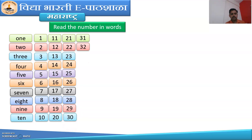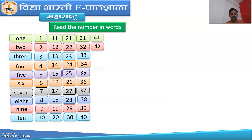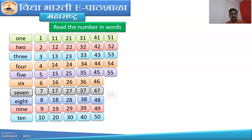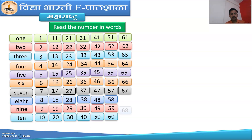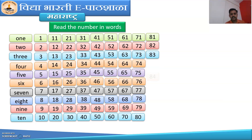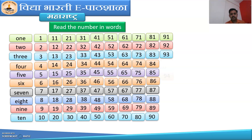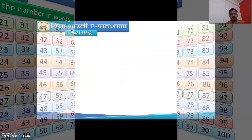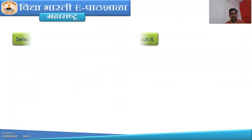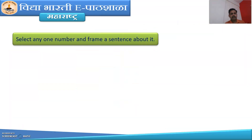You have to read all these numbers from 1 to 100. Now we have to use these numbers to frame sentences. So read these numbers in words. Now select any one number from 1 to 100 and frame a sentence about it.